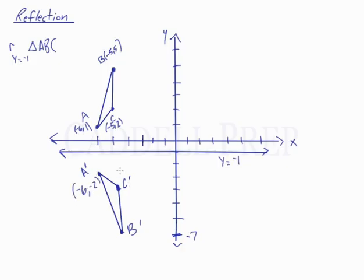C prime is at negative 5, negative 3. And B prime is at negative 5, negative 7. So a quick sketch easily helps us figure out the coordinates for the image if we reflect triangle ABC over the line y equals negative 1.